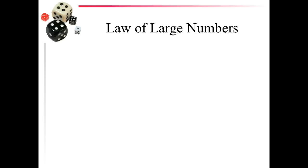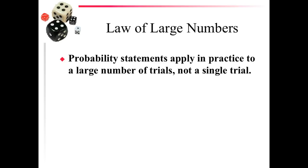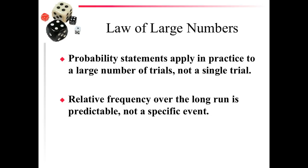Another very important concept in probability is the law of large numbers. It says that probability statements apply in practice to a large number of trials, not a single trial. We really can't apply this probability to a specific event, but the relative frequency over the long run is predictable. Basically it's saying if you try this experiment many, many thousands — hundreds of thousands — of times, this is the way it's likely to turn out.